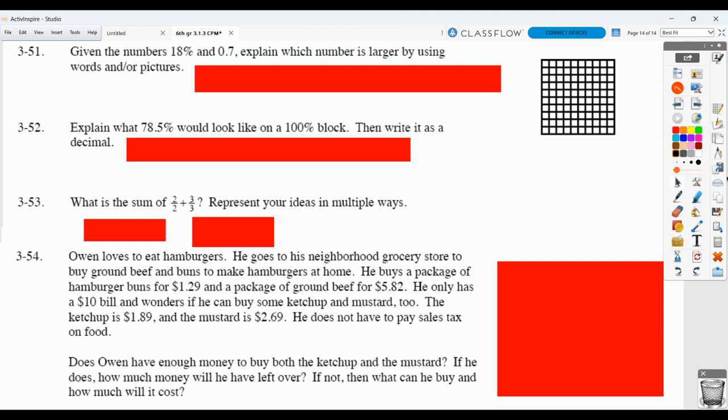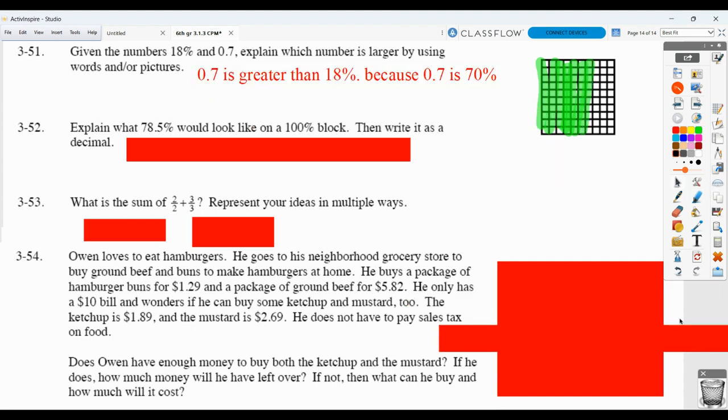Given these numbers, which one is larger? Use words or pictures. So if you're going to do picture, you would show 18 percent would be 18 of these squares, and 7 tenths, which is what we see here, would be 7 columns. And we can see that 7 tenths is then greater than 18 percent. Another way we could explain it is we could say we know 7 tenths is the same as 70 percent. 70 percent is going to be greater than 18 percent. Or we could have changed 18 percent to a decimal and compared it that way.